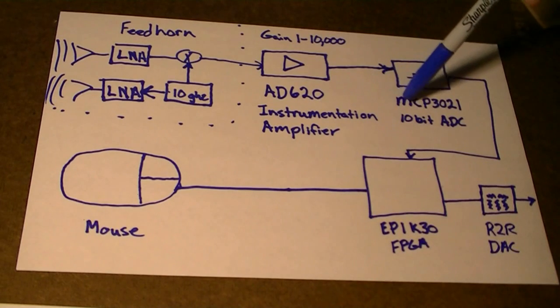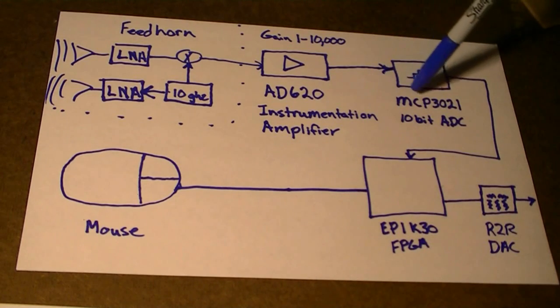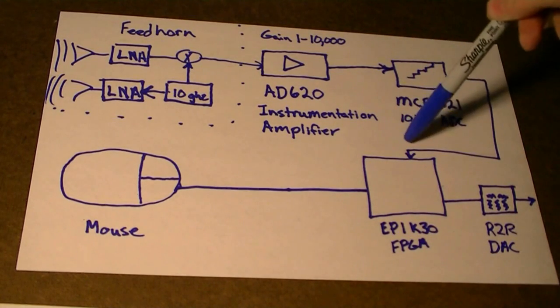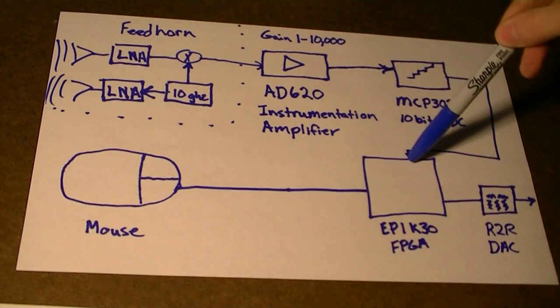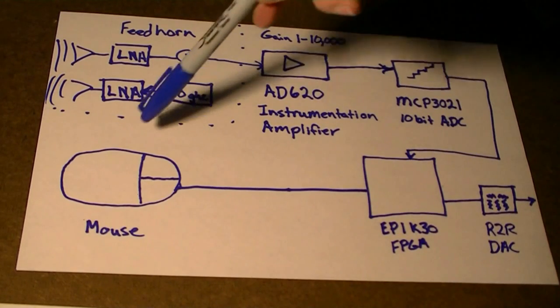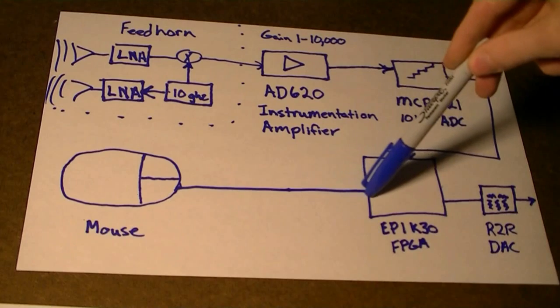The amplified signal goes into an analog-to-digital converter by Microchip, and then fed into an Altera FPGA, which has a frame buffer, a VGA controller, an I2C controller, and a PS2 controller.